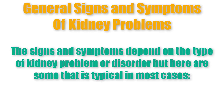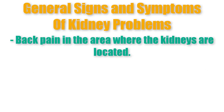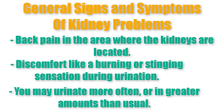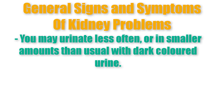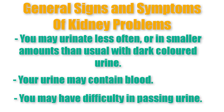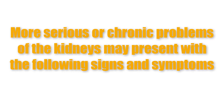The signs and symptoms of kidney problems depend on the type of disorder, but there are some general symptoms. First, there's back pain, usually in the areas where the kidneys are located. There can be discomfort like a burning or stinging sensation during urination. You may urinate more often or in greater amounts than usual, or conversely less often and in smaller amounts. Your urine may be darkly colored — reddish urine indicates blood in the urine — and you may have difficulty passing urine.